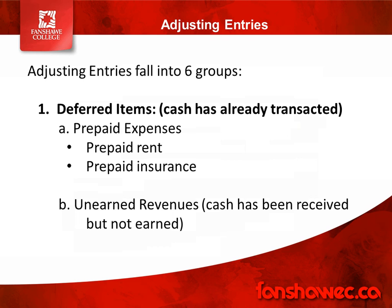There are six categories of adjusting entries. The first is deferred items, where cash is already transacted — either we've already paid cash or cash has already been paid to us. If we've already paid cash, those are prepaid expenses, such as property taxes, insurance, or prepaid rent. On the flip side, we could receive cash in advance of providing a good or service — that's unearned revenue. For example, if someone prepays us to cut their grass six times over the summer, we can't recognize that as revenue yet because we haven't provided the service. Deferred items are where cash is already transacted but the good or service hasn't yet been provided.